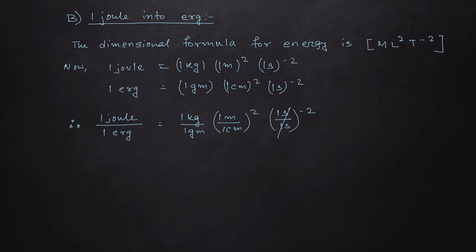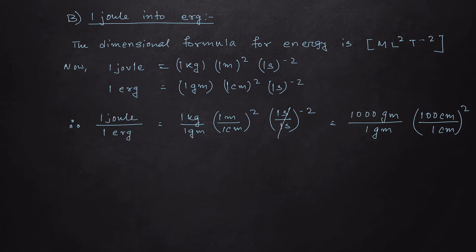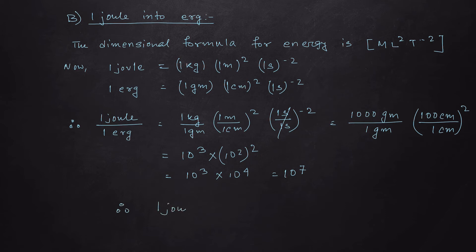Dividing one joule by one erg, we write (one kg / one gram) × (one meter / one centimeter)² × (one second / one second) to the power minus two. Converting: one kg = 1000 grams and one meter = 100 centimeters. So we get 10³ × (10²)² = 10³ × 10⁴ = 10⁷. Therefore, one joule equals 10⁷ erg.